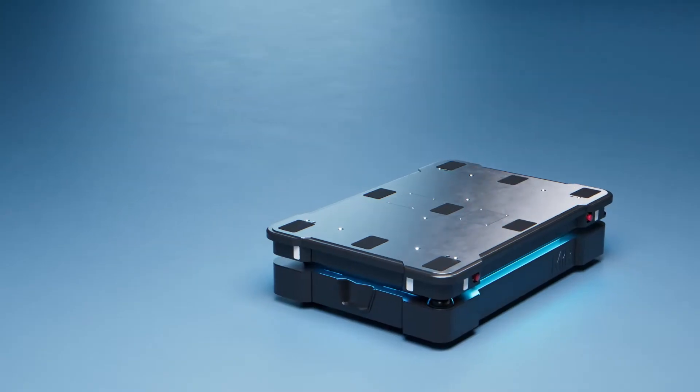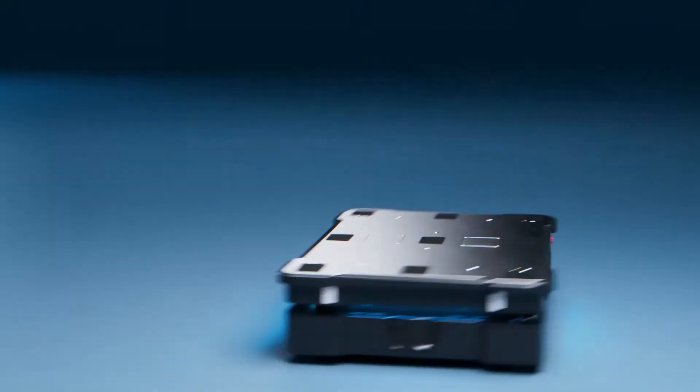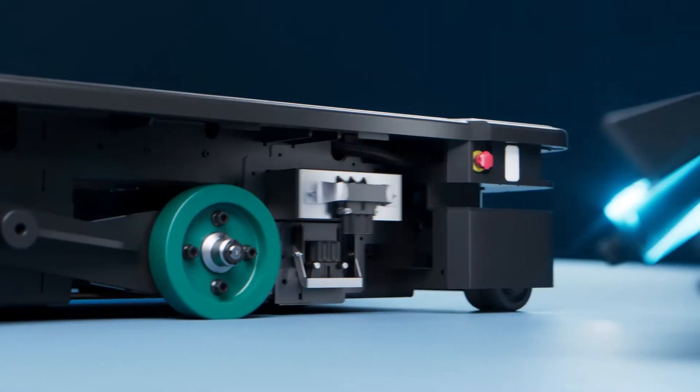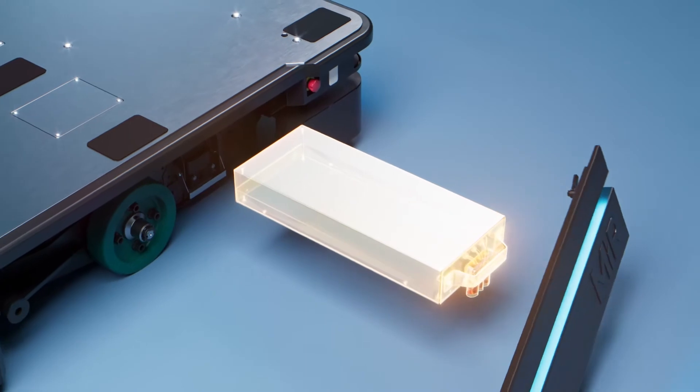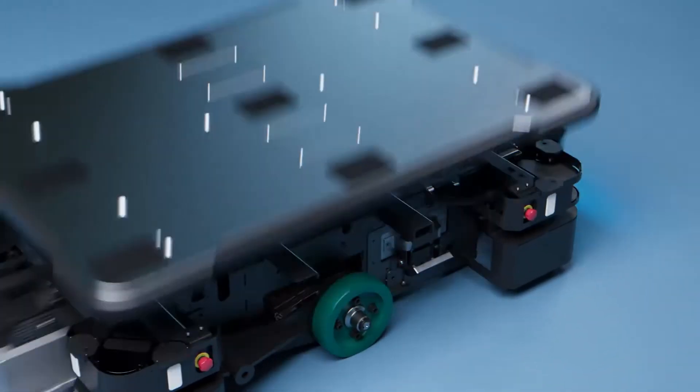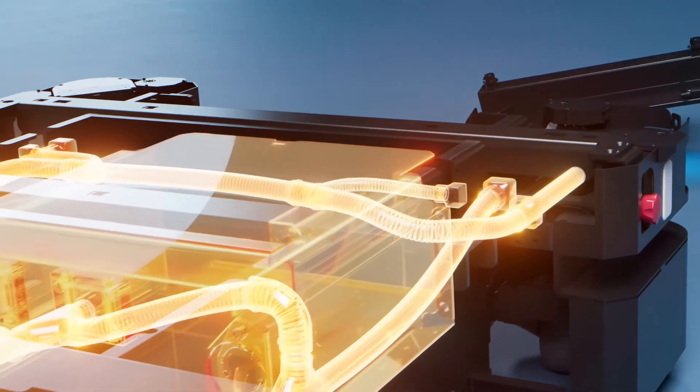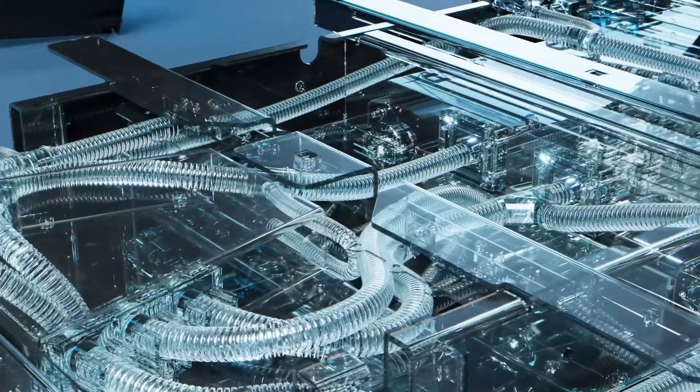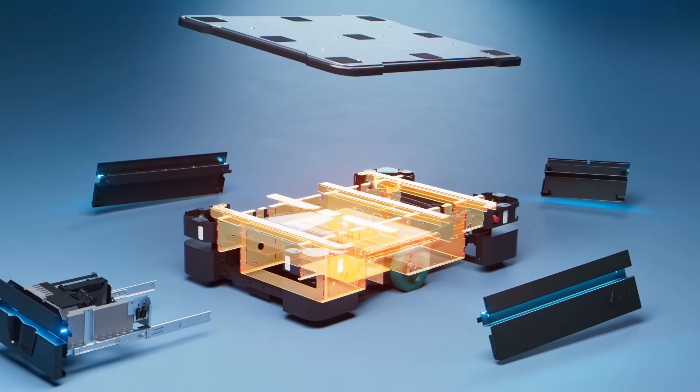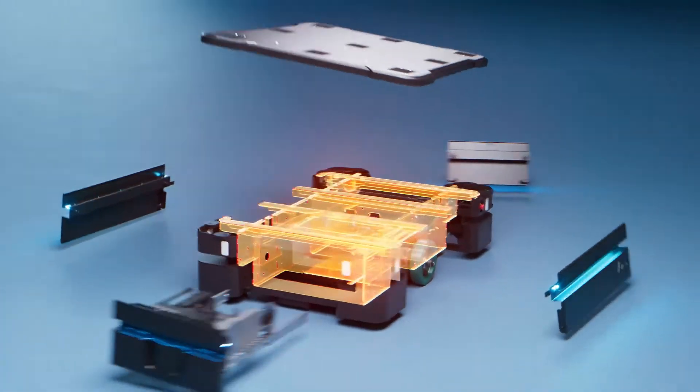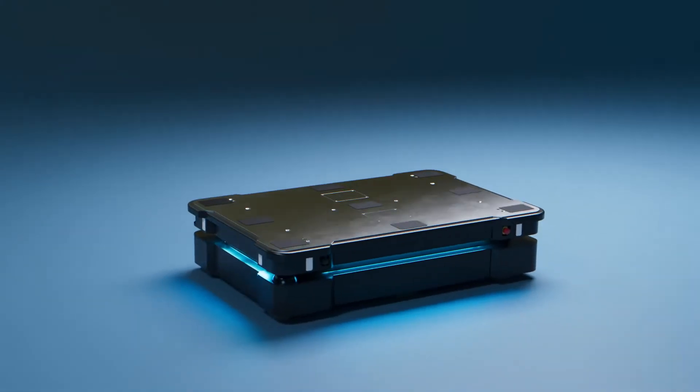The MiR 600 and MiR 1350 ensure minimal downtime with easy access for service. The robots are the first IP52-rated AMRs, protecting against dust and water drops. With enhanced and protected components and a sturdy, robust chassis, the MiR 600 and MiR 1350 offer a long lifetime with heavy-duty lifting.